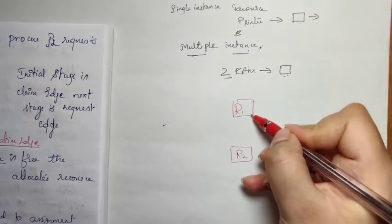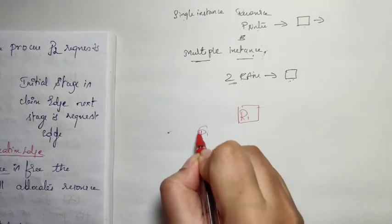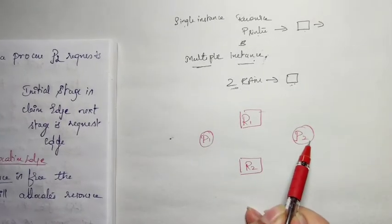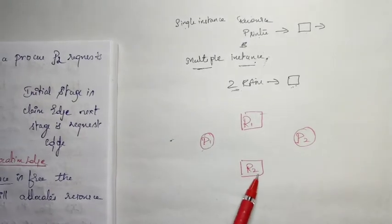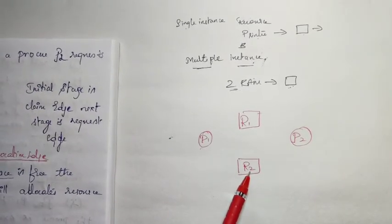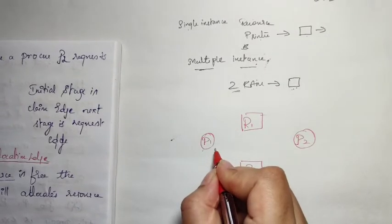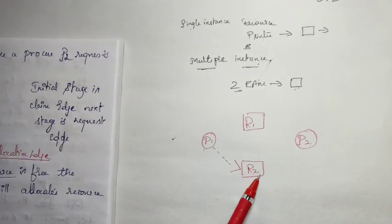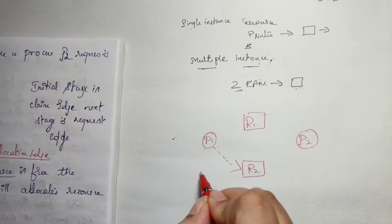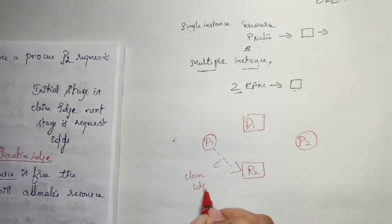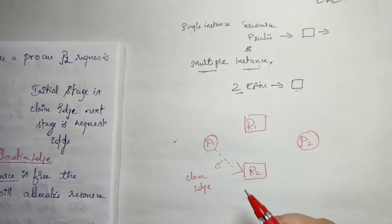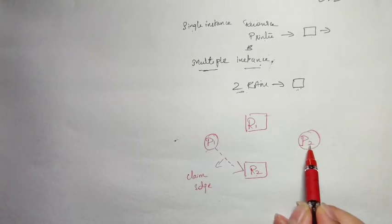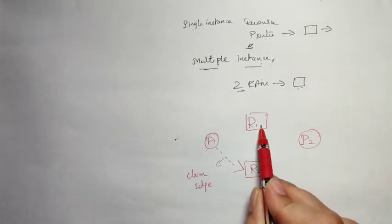The graph consists of two resources R1 and R2, and processes P1 and P2. If process P1 may request resource R2 in the future, this edge is called a claim edge, represented by a dotted arrow. Whenever process P2 requests resource R1, that edge is called a request edge.